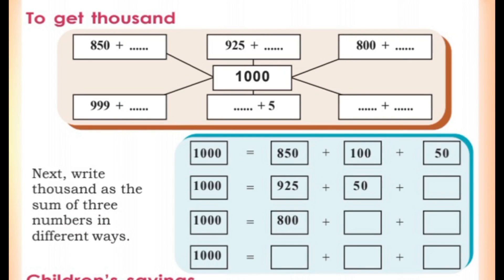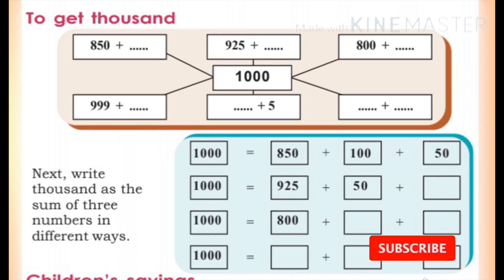In the previous class, we discussed about thousands — 1,000, 2,000, 3,000, and so on. If we keep counting, we reach 10,000.